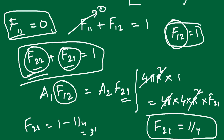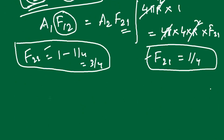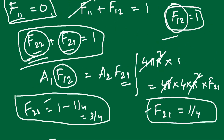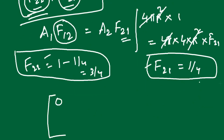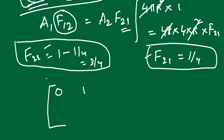Now all view factors are known: F11 = 0, F12 = 1, F21 = 1/4, F22 = 3/4. The view factor matrix is [0, 1; 1/4, 3/4]. This is the view factor matrix for the concentric sphere system.